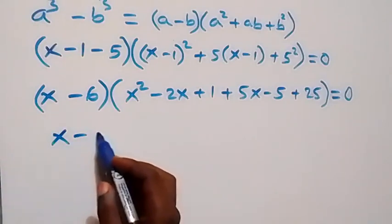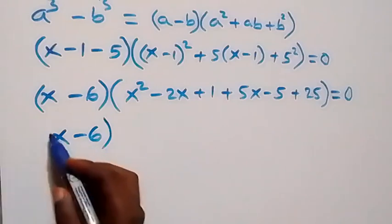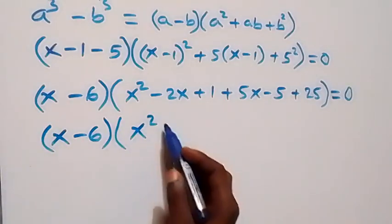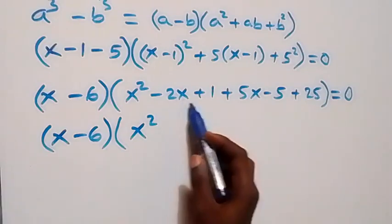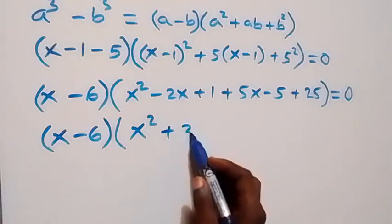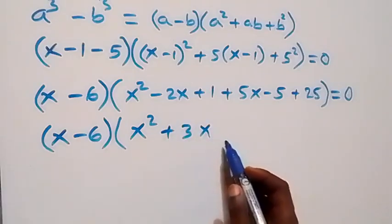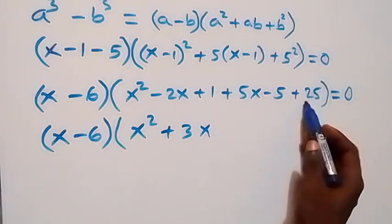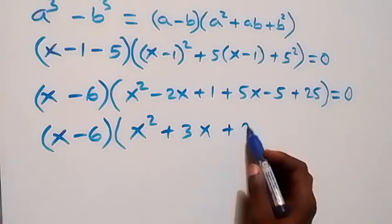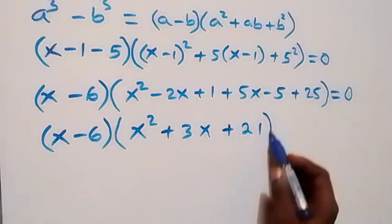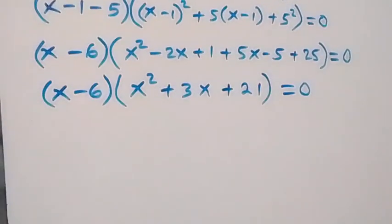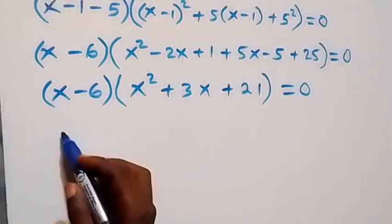Bringing this together: x minus 6, into bracket x squared, then minus 2x plus 5x gives plus 3x, then minus 5 plus 25 is 20, plus 1 gives plus 21, close bracket, equals to 0.